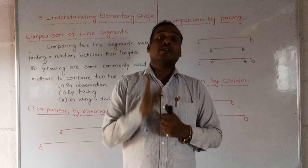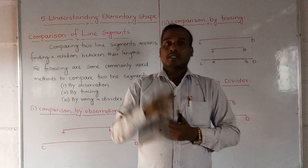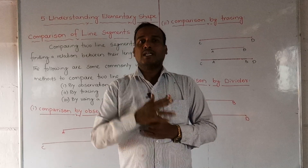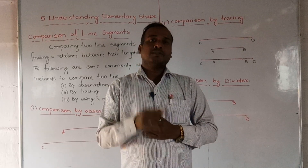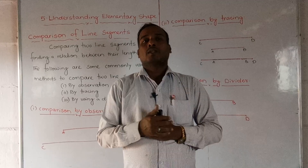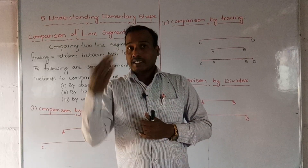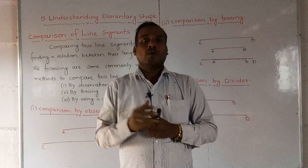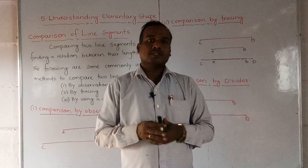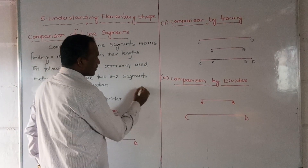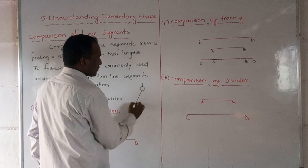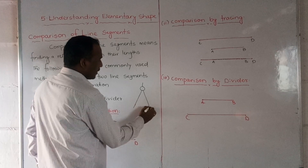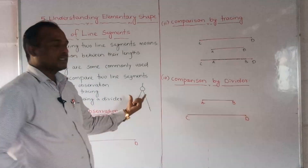Inside the geometry box there is a divider. The divider has two needles — like a compass but with two needles. Compass means one needle with one pencil setup. The second instrument is with two needles, and that is called a divider. You can see it in the figure shown.